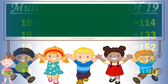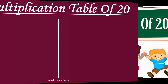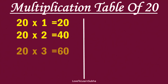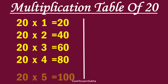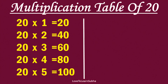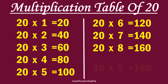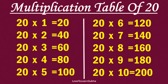Multiplication table of 20. 20×1 is 20, 20×2 is 40, 20×3 is 60, 20×4 is 80, 20×5 is 100, 20×6 is 120, 20×7 is 140, 20×8 is 160, 20×9 is 180, 20×10 is 200.